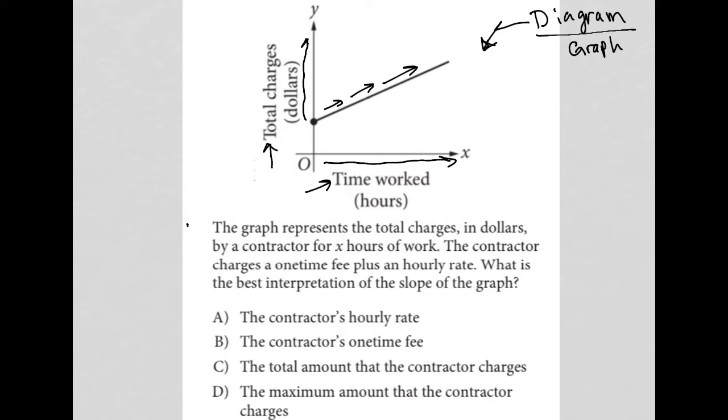The question says the graph represents the total charges in dollars by a contractor for x hours of work. The contractor charges a one-time fee. That makes sense, because even here, when there is no time worked at the origin, we still have a total charge of whatever that number represents. That represents our one-time fee.